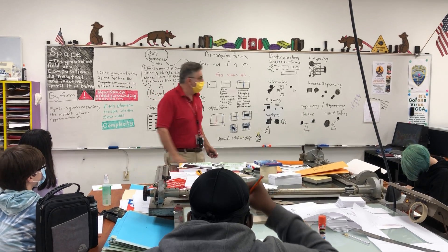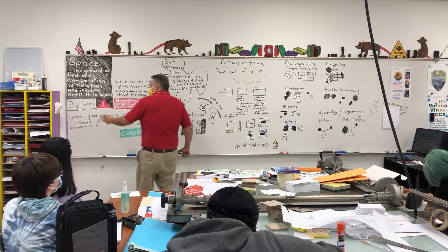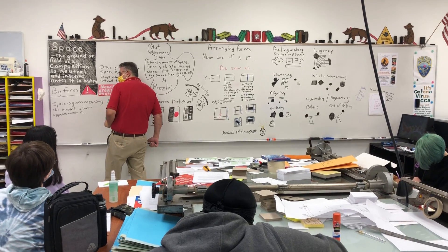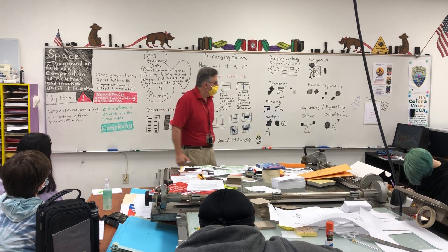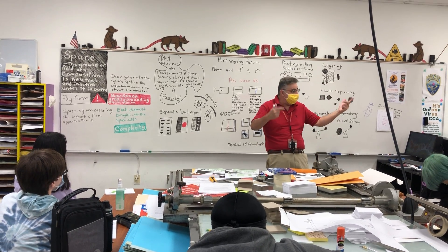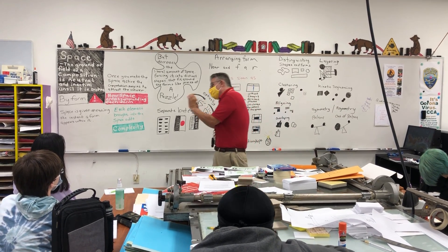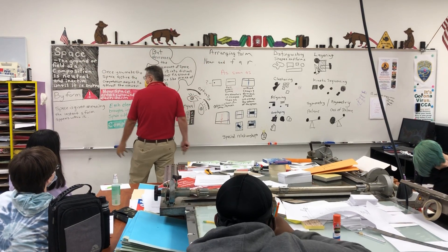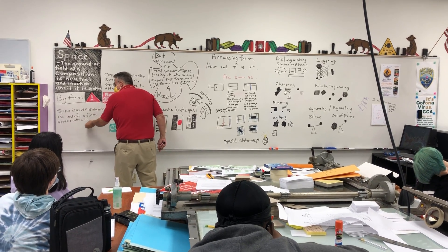If I came in here and said, look at that board and tell me what it says, you'd say nothing — it's inactive. But the moment I start putting stuff in it, on it, around it, I have broken that neutral space by form and shape. Text is nothing but shapes — characters of a letter. And when you put some of those shapes together, they form words, and when you put those words together, they form sentences. So we take this space and make it active. Space is given meaning the instance a form appears within it.